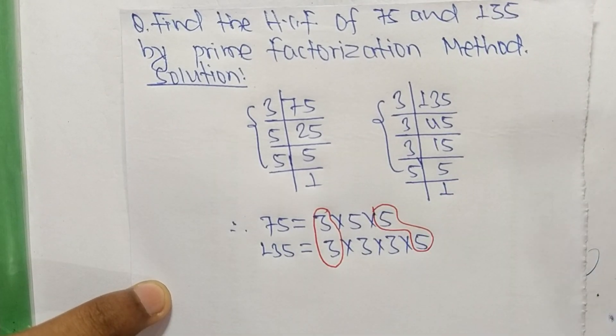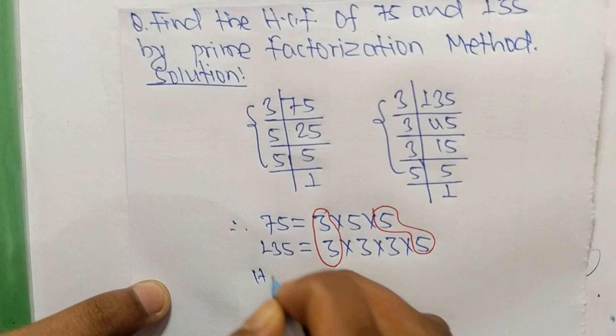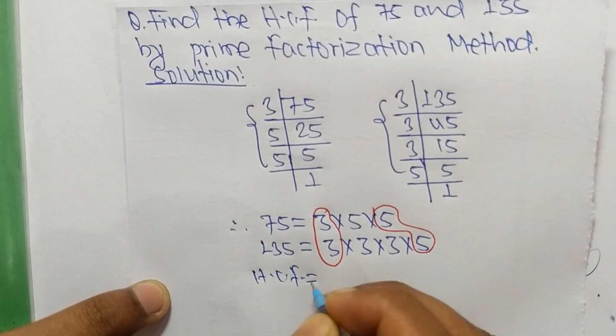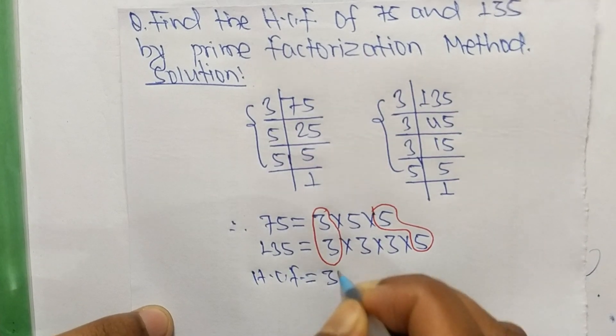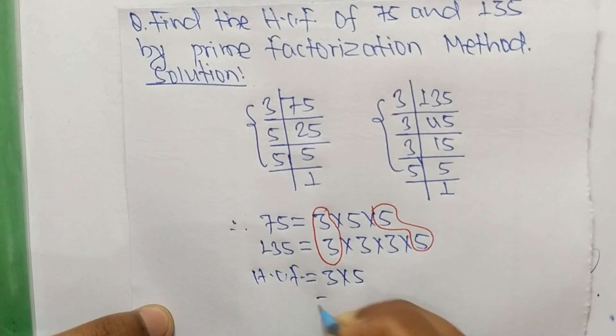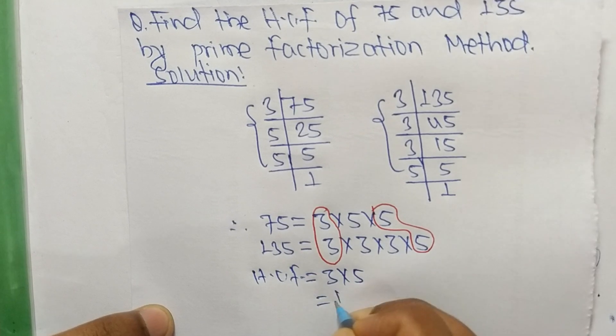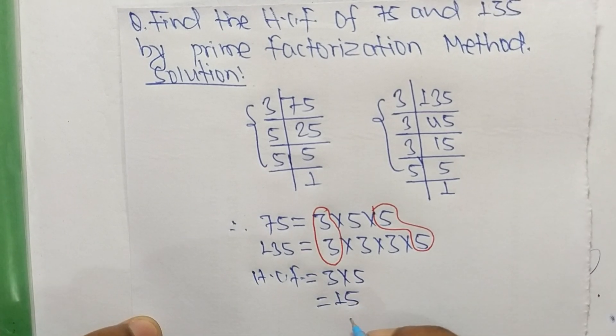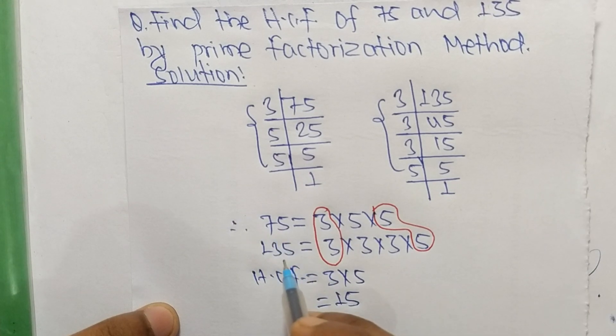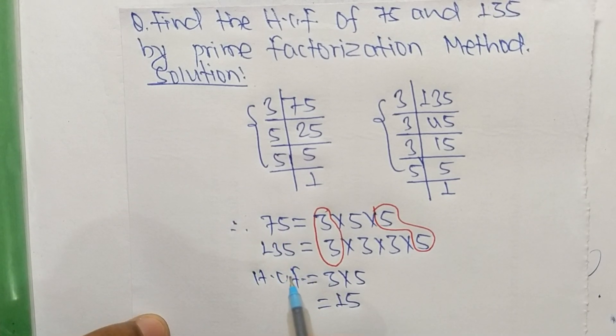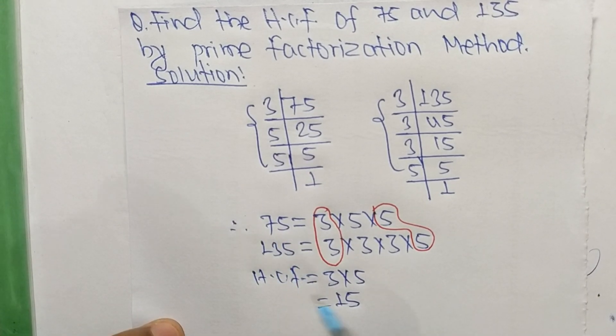The HCF is equal to the product of common factors, which are 3 and 5. So 3 times 5 equals 15. Therefore, 15 is the HCF of 75 and 135. Thanks for watching.